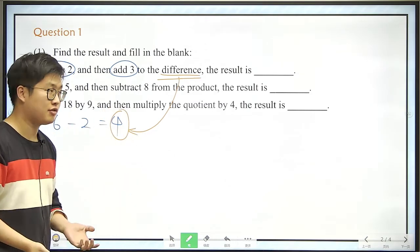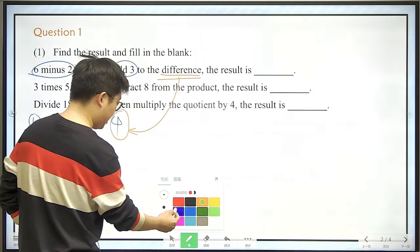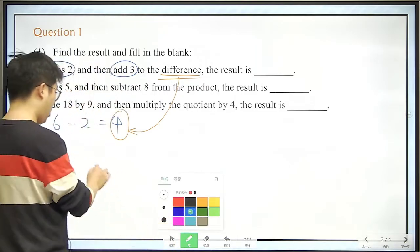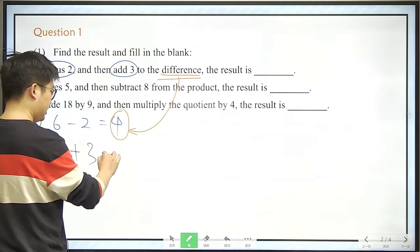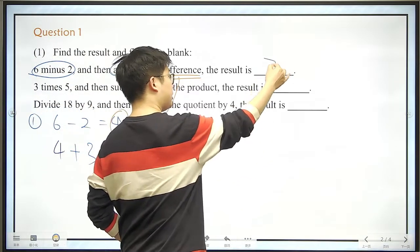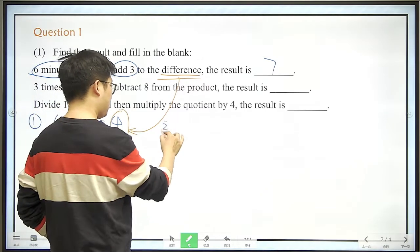So we should add 3 to the difference, that means 4 plus 3, that is 7. So the correct answer for the first problem would be 7. And then let's move on to the next one.